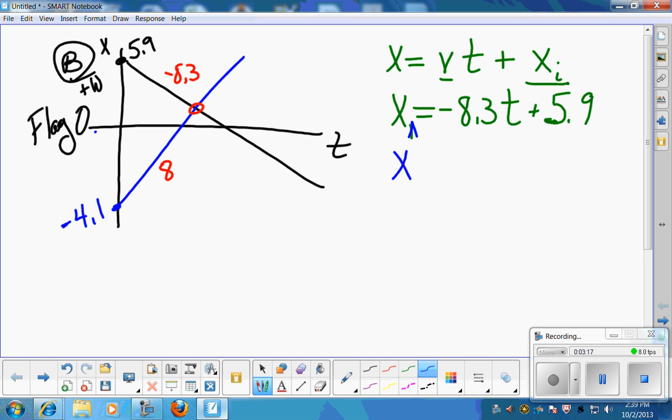Person number 2, or person B, so I should call them A and B. Person B, his velocity is 8, positive 8. His initial position is negative 4.1. So, I've got the equation then for position with respect to time for my two people.